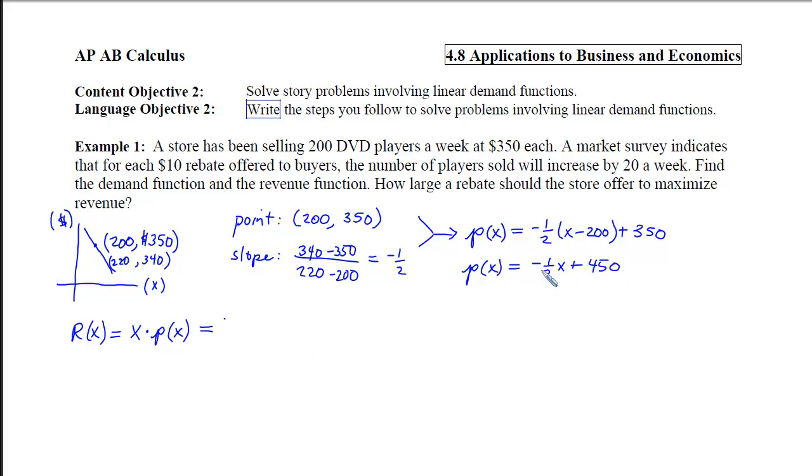So we've got to remember that revenue is the number of items we sell times the amount we're charging per item. If I multiply this demand function times X, I will get a negative 1 half X squared plus 450 X. Now the goal is to answer the question, how large a rebate should the store offer in order to maximize the revenue? So to maximize this revenue function, we need to look at when its derivative changes from positive to negative. So I'll take the derivative of this and get a negative X plus 450.